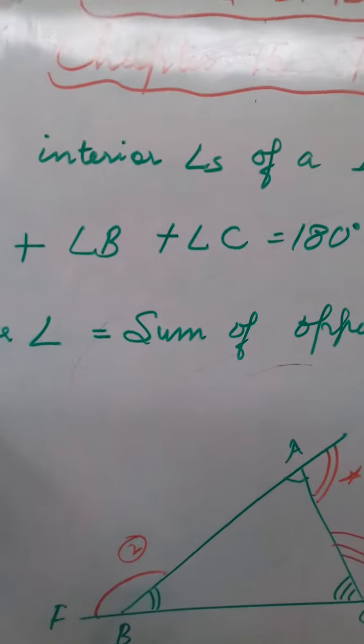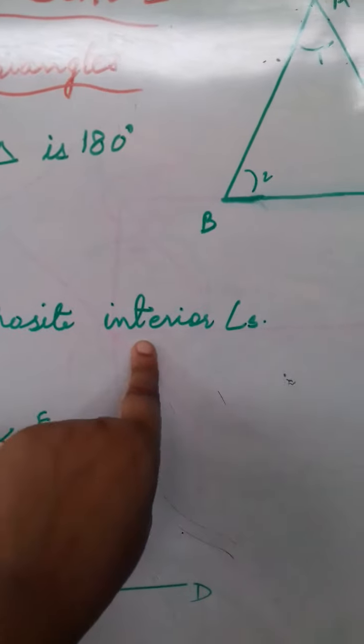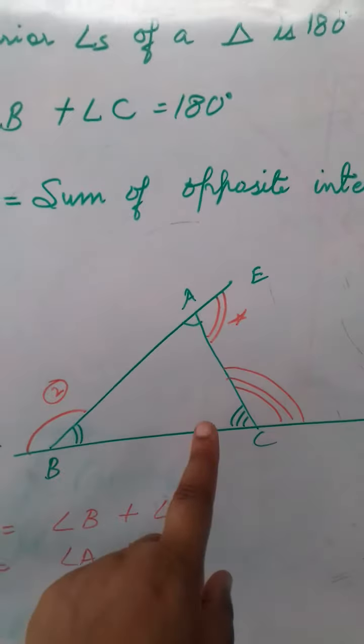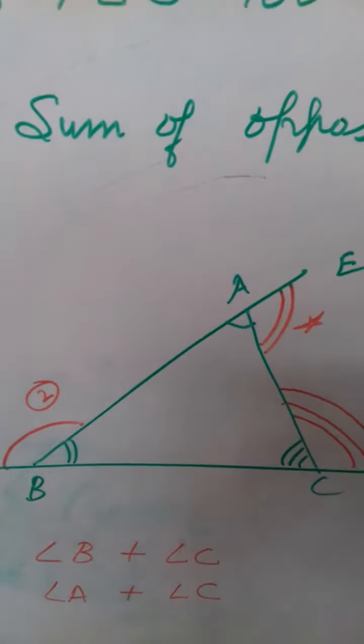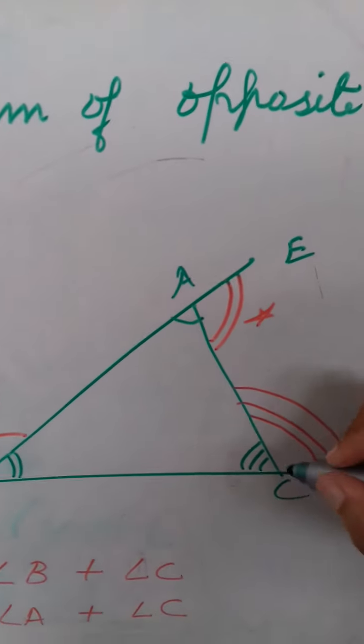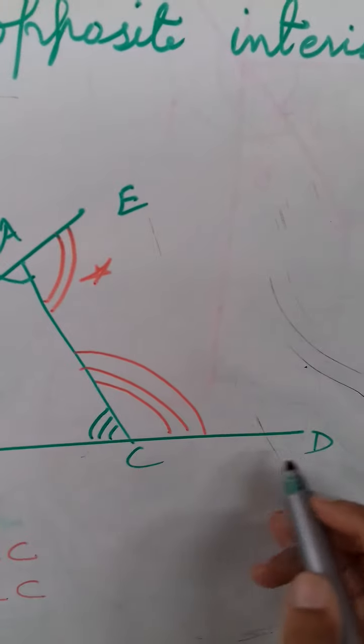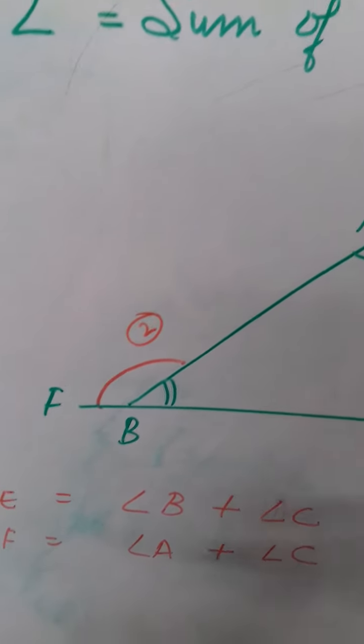And second thing we need to know is that exterior angle is equal to sum of opposite interior angles. For example this is a triangle, can you see. Now these are your interior angles but this angle, this one CAE, this is your exterior angle. ACD this is your exterior angle because they are outside the triangle.